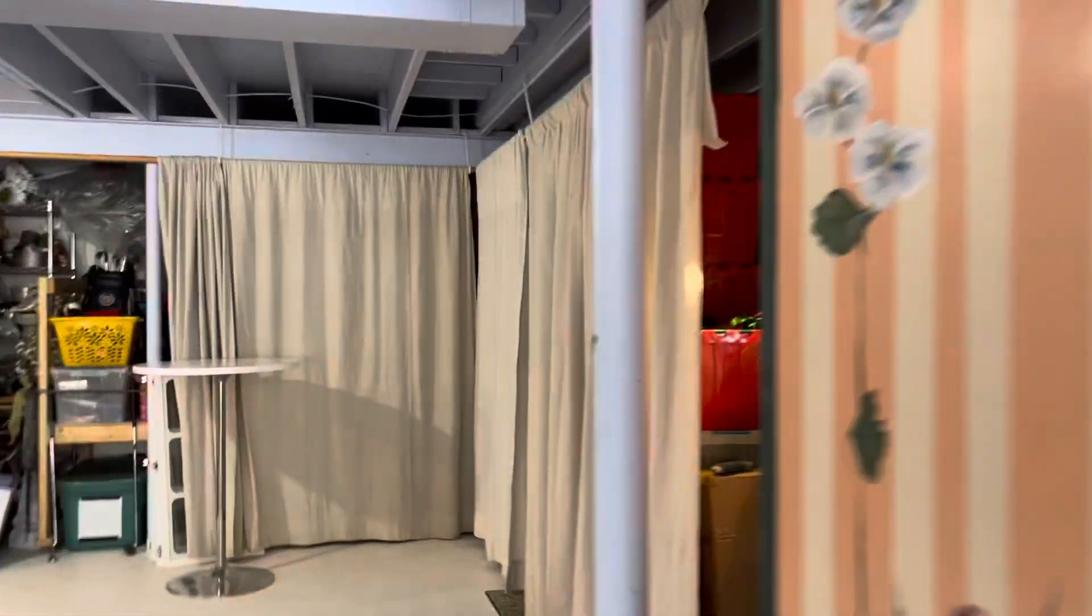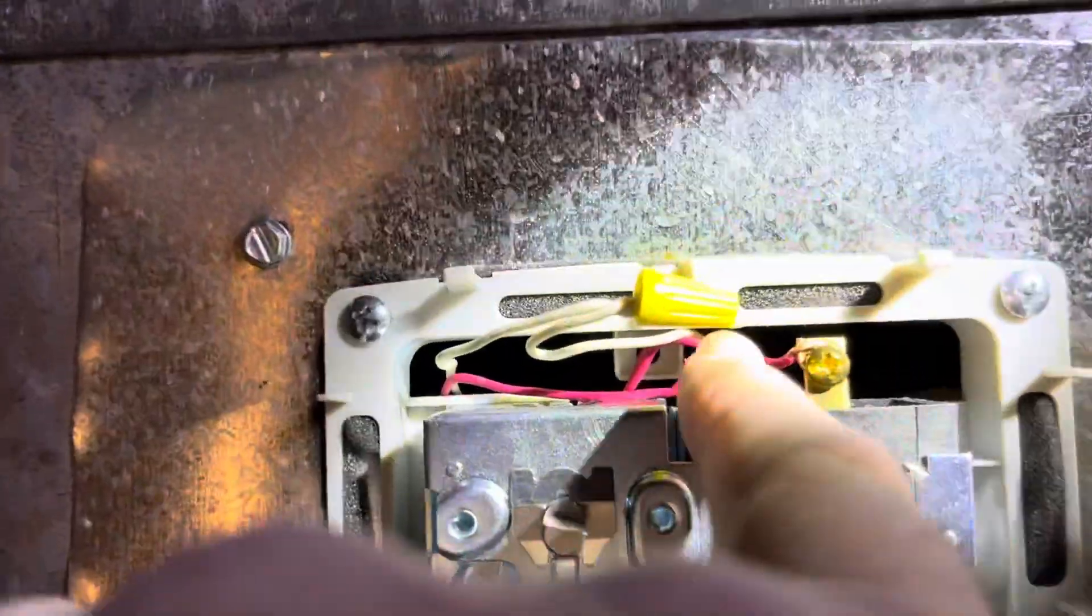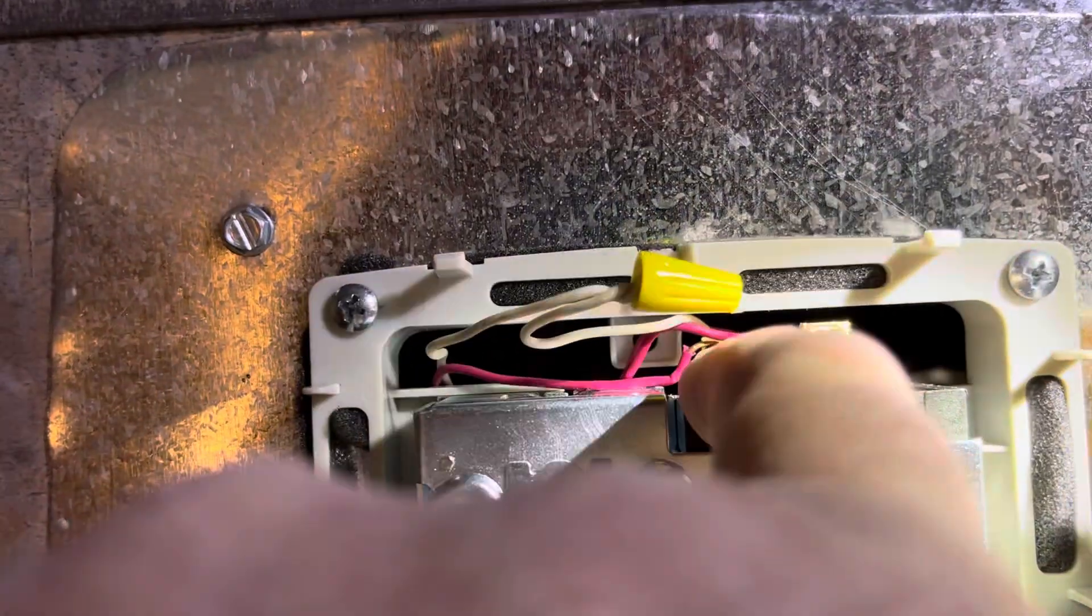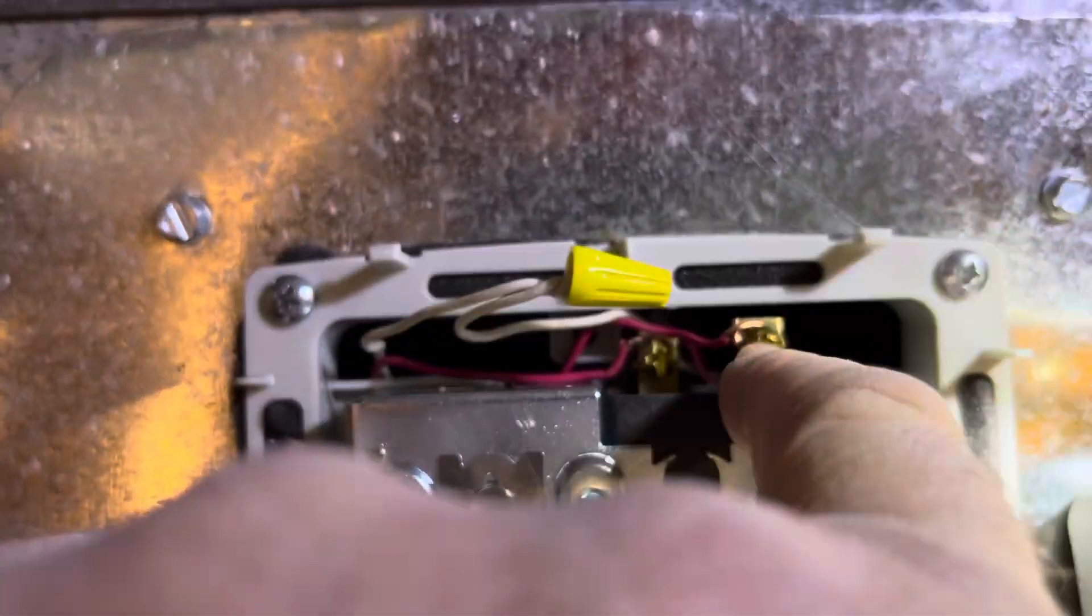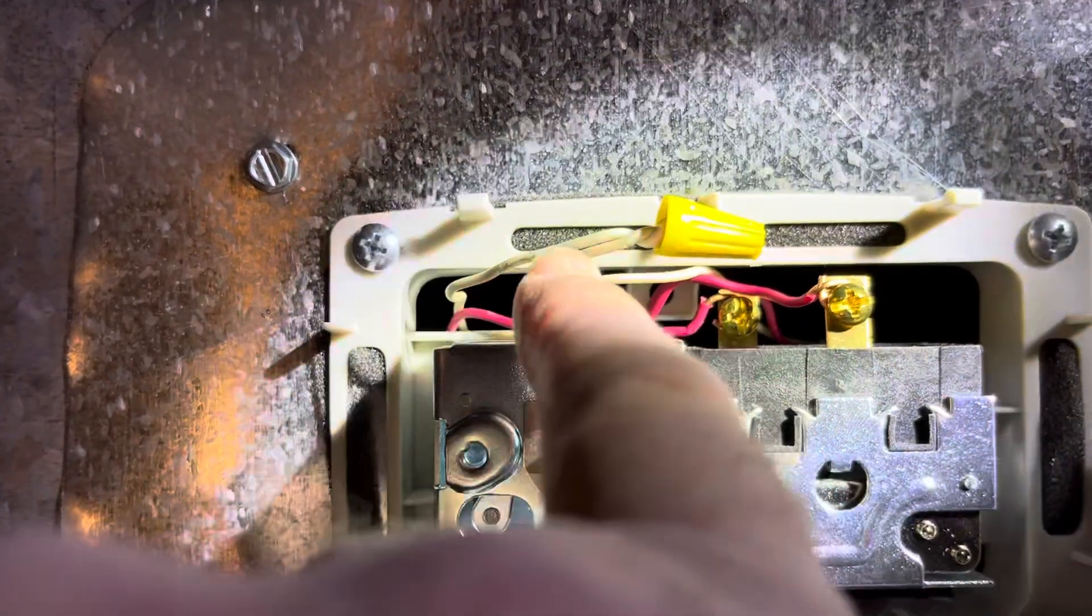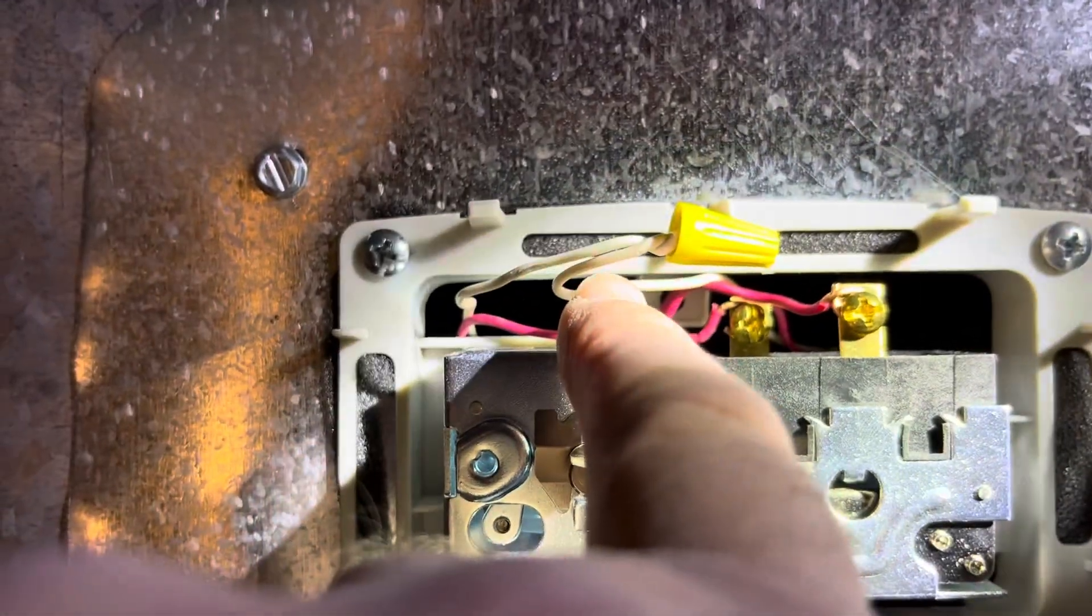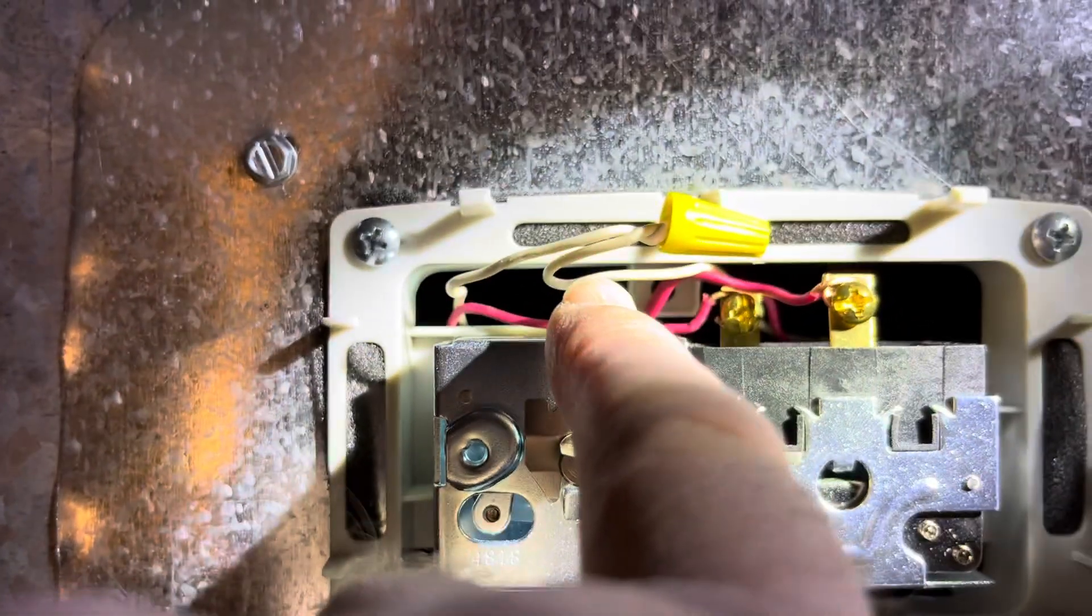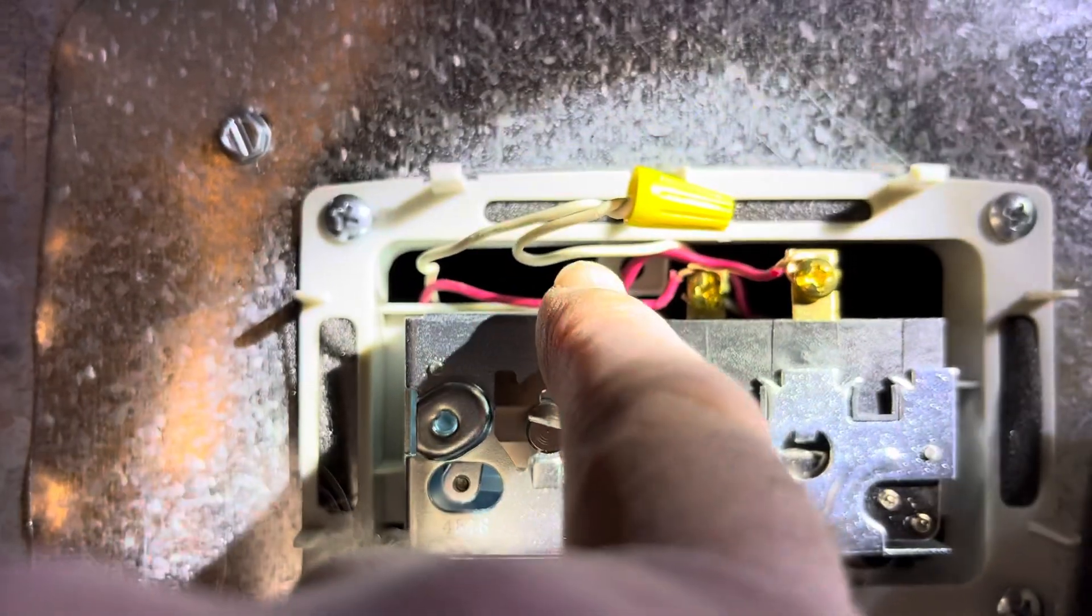So going back to the actual box here, the manual box, all you really have to do is take the power source, run it to the post here, and then another power source, another wire to this post, and wire the two commons together, just like a switch, a light switch basically.